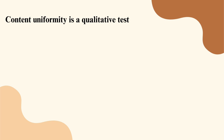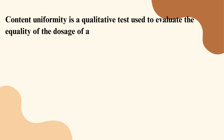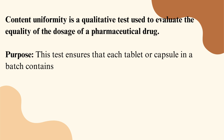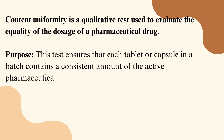Content uniformity is a qualitative test used to evaluate the equality of the dosage of a pharmaceutical drug. The purpose of this test ensures that each tablet or capsule in a batch contains a consistent amount of the active pharmaceutical ingredient, or API.